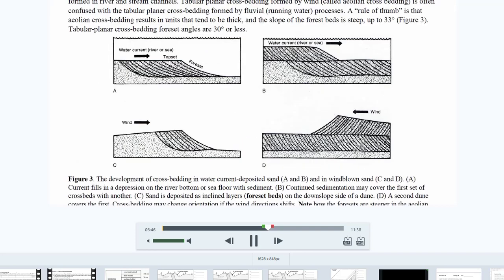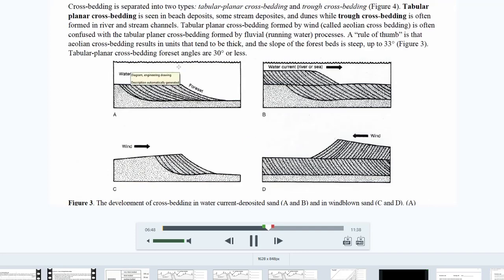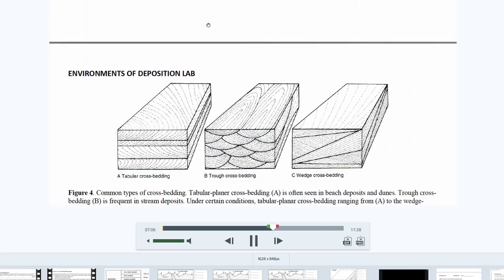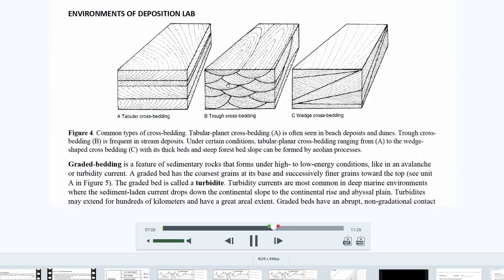And then note that the other ones are the trough cross bedding. And these are going to be mostly in stream deposits. Although, like we just mentioned, you can get the tabular cross bedding in streams. But these trough cross beddings are going to be in stream deposits. So that's something to think about because there is a photo that looks like this later on that we'll have to identify.